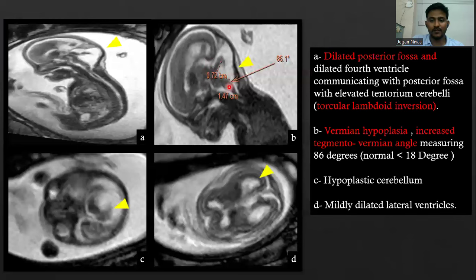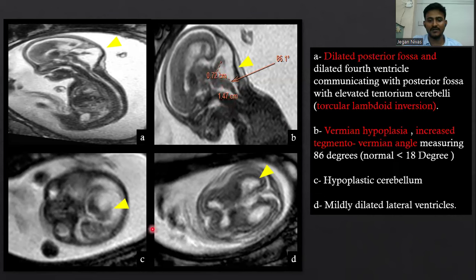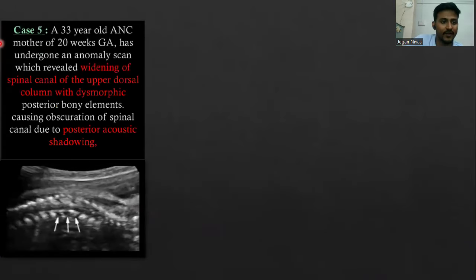On image B, we can see vermian hypoplasia with increased tegmental vermian angle measuring 86 degrees — the normal is less than 80 degrees. We can also appreciate hypoplastic cerebellum and mildly dilated rectum. We reported this case as a Dandy-Walker malformation.